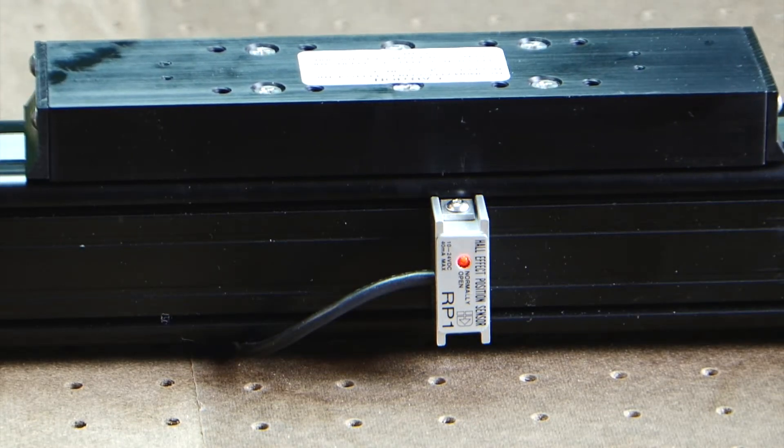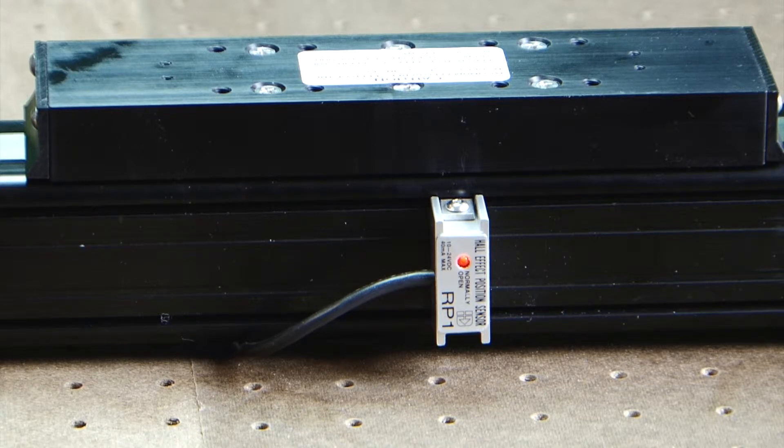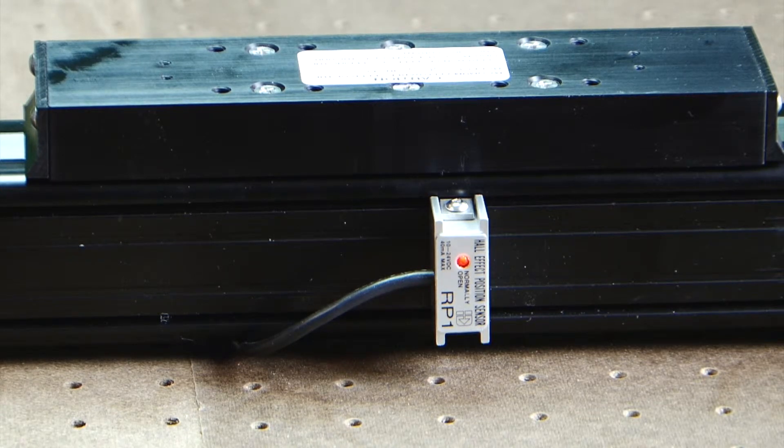If homing in the negative direction to the home input, it will always approach the home switch from this direction. If the load is on the positive side of the home input, it will find the home switch before the hard stop.